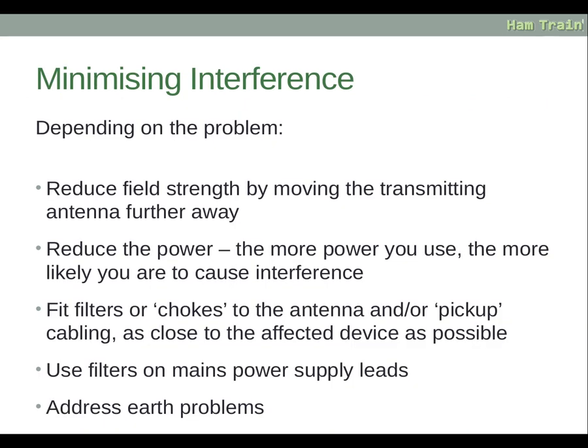To minimise interference, depending on the problem, you can reduce field strength by moving the transmitting antenna further away. You could reduce the power you're putting out — the more power you use, the more likely you are to cause interference. You can fit filters or chokes to the antenna and/or the pickup cabling at the affected house, as close to the affected device as possible, to stop your signals from entering the unit. You can also use filters on mains power supply leads and address any earth problems. Filters and chokes are your friend — the more you can use, the more you can stop the problem.